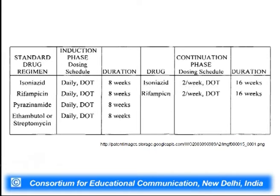The drug regimes are given according to various weeks. In the initial eight weeks, isoniazid, rifampicin, pyrazinamide, ethambutol, and streptomycin are given daily in the DOTS regime, followed by other drug regimes. World Tuberculosis Day is celebrated on 24th March every year to campaign for proper treatment of tuberculosis, to ensure there is no development of multi-drug resistant tuberculosis in the future. With this note, I end my lecture on tuberculosis. Thank you very much.